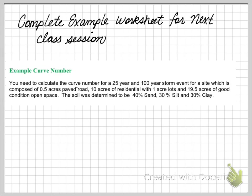To help you with this exercise, please complete the following worksheet in your note packet. You need to calculate the curve number for both a 25-year and 100-year storm event for a site with given land use characteristics. You can use the texture triangle to determine your soil type, then use the curve number table in your textbook or note packets to determine your CN2 for the 25-year storm. You will need to do an adjustment for the 100-year storm. We will review this in class and discuss it further.